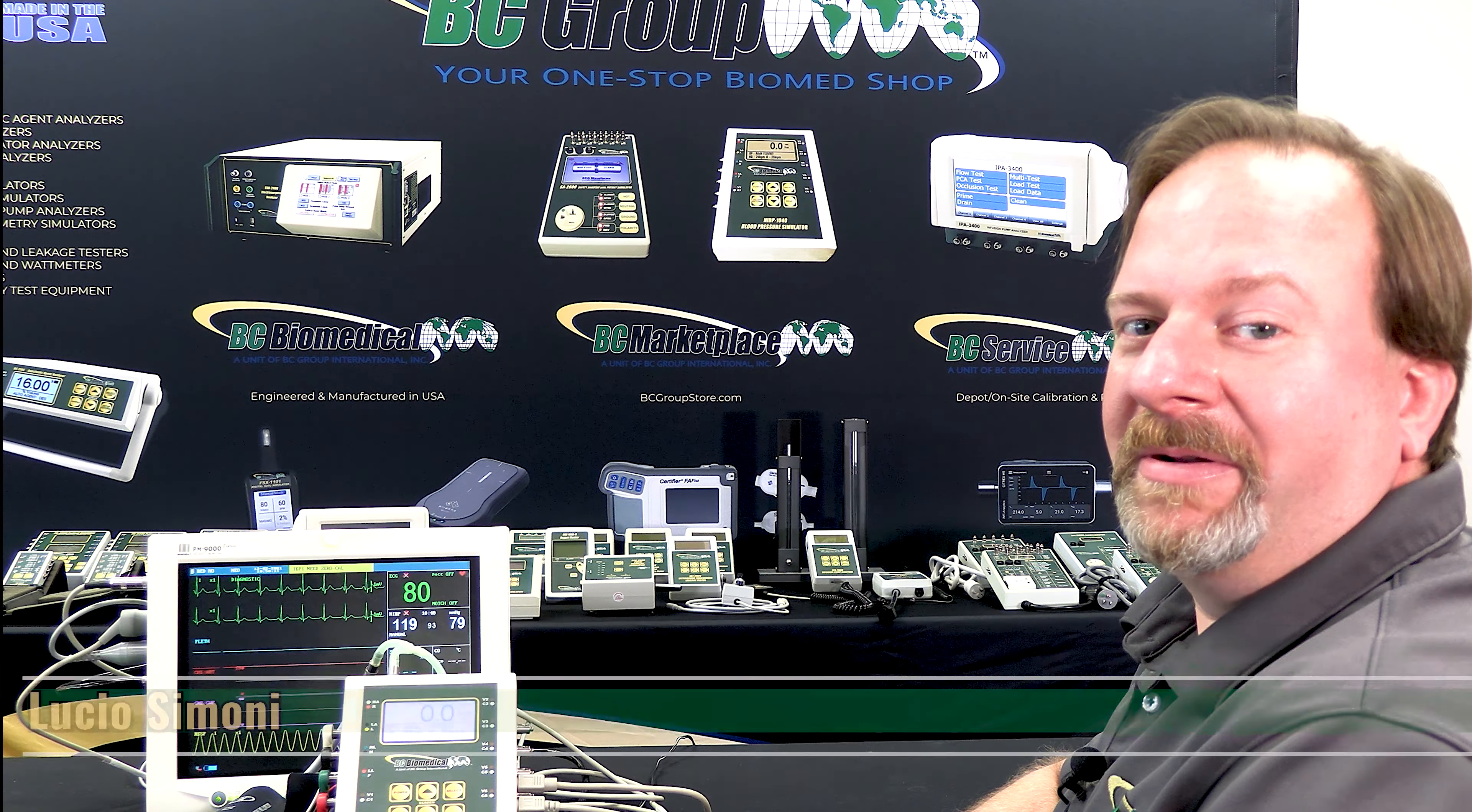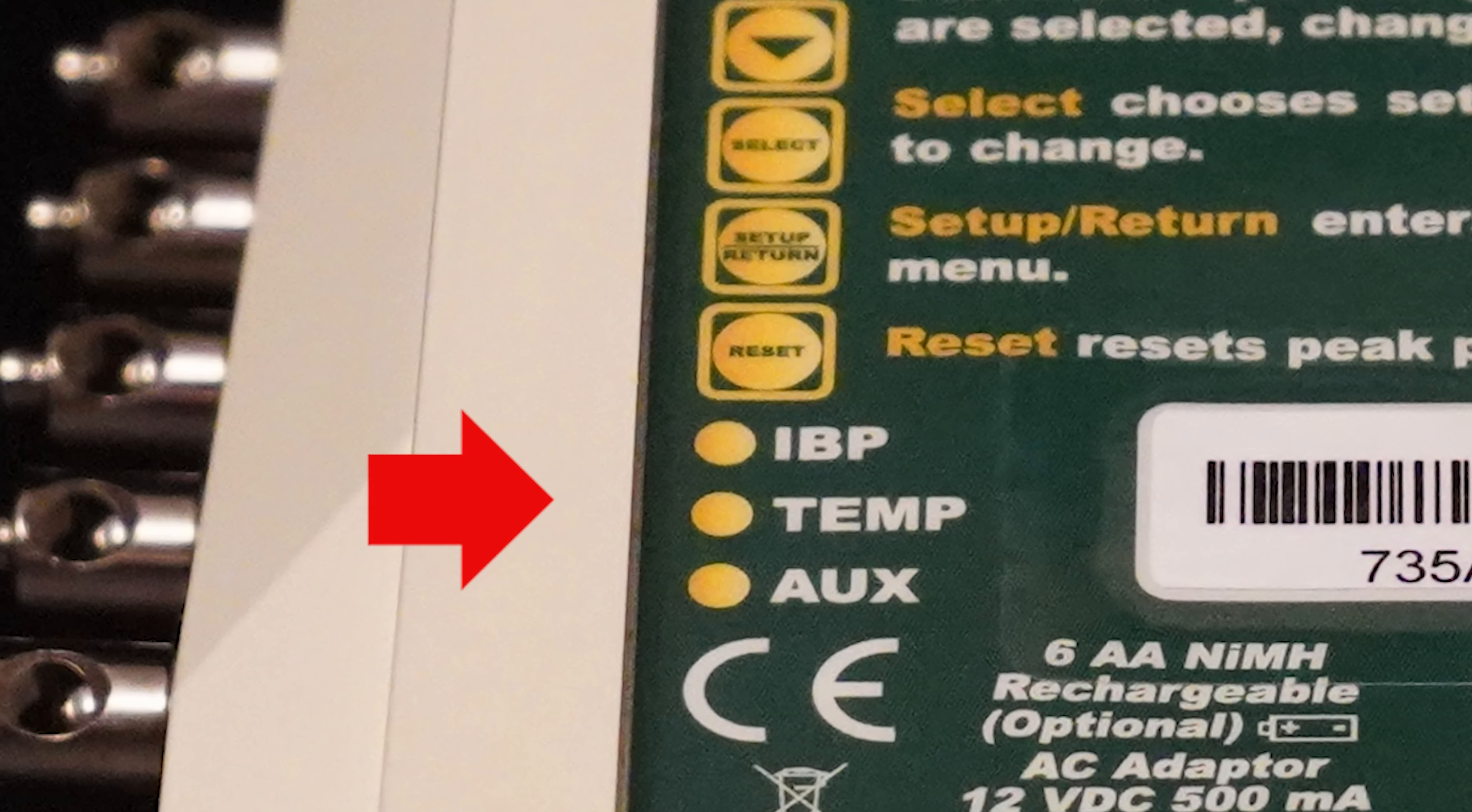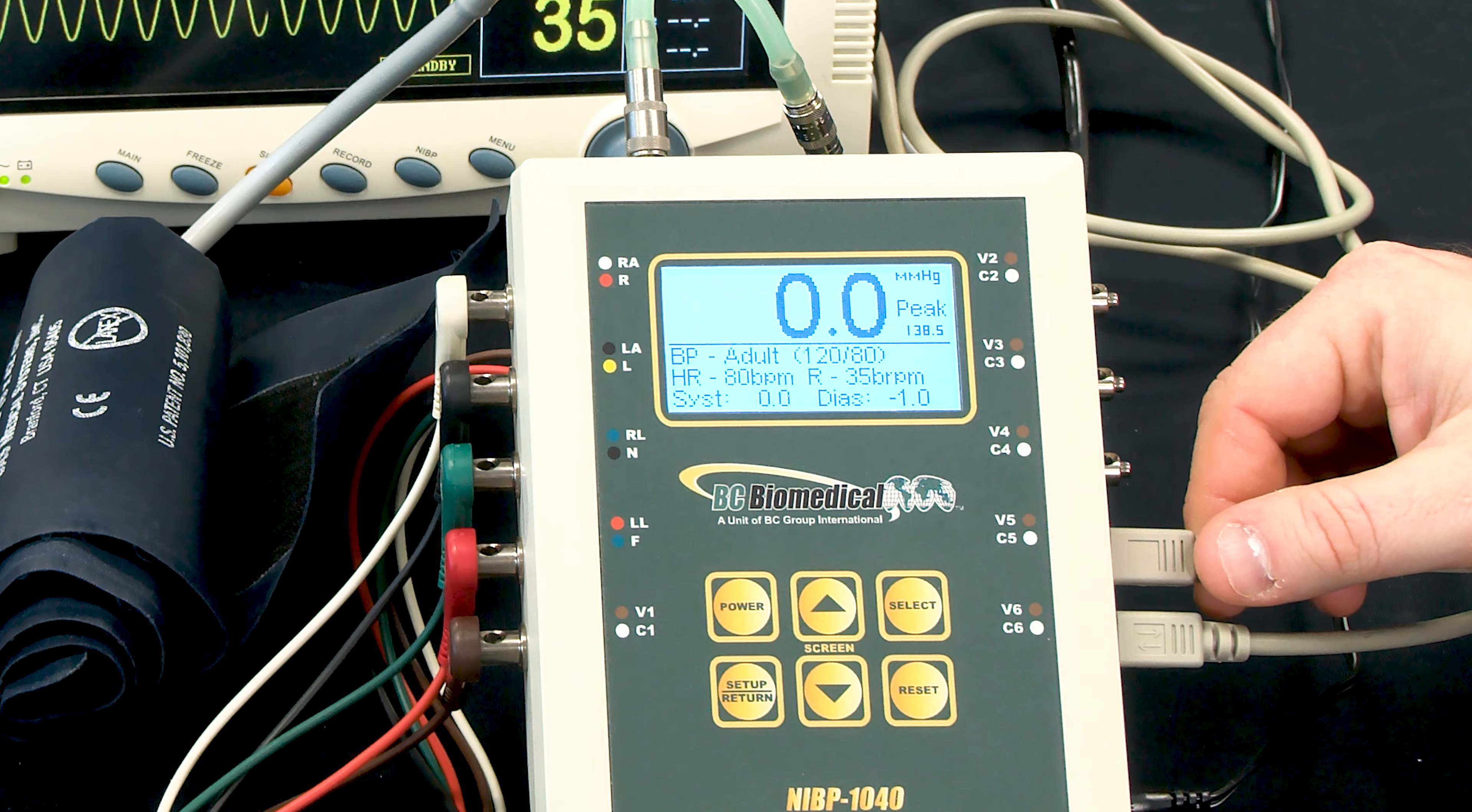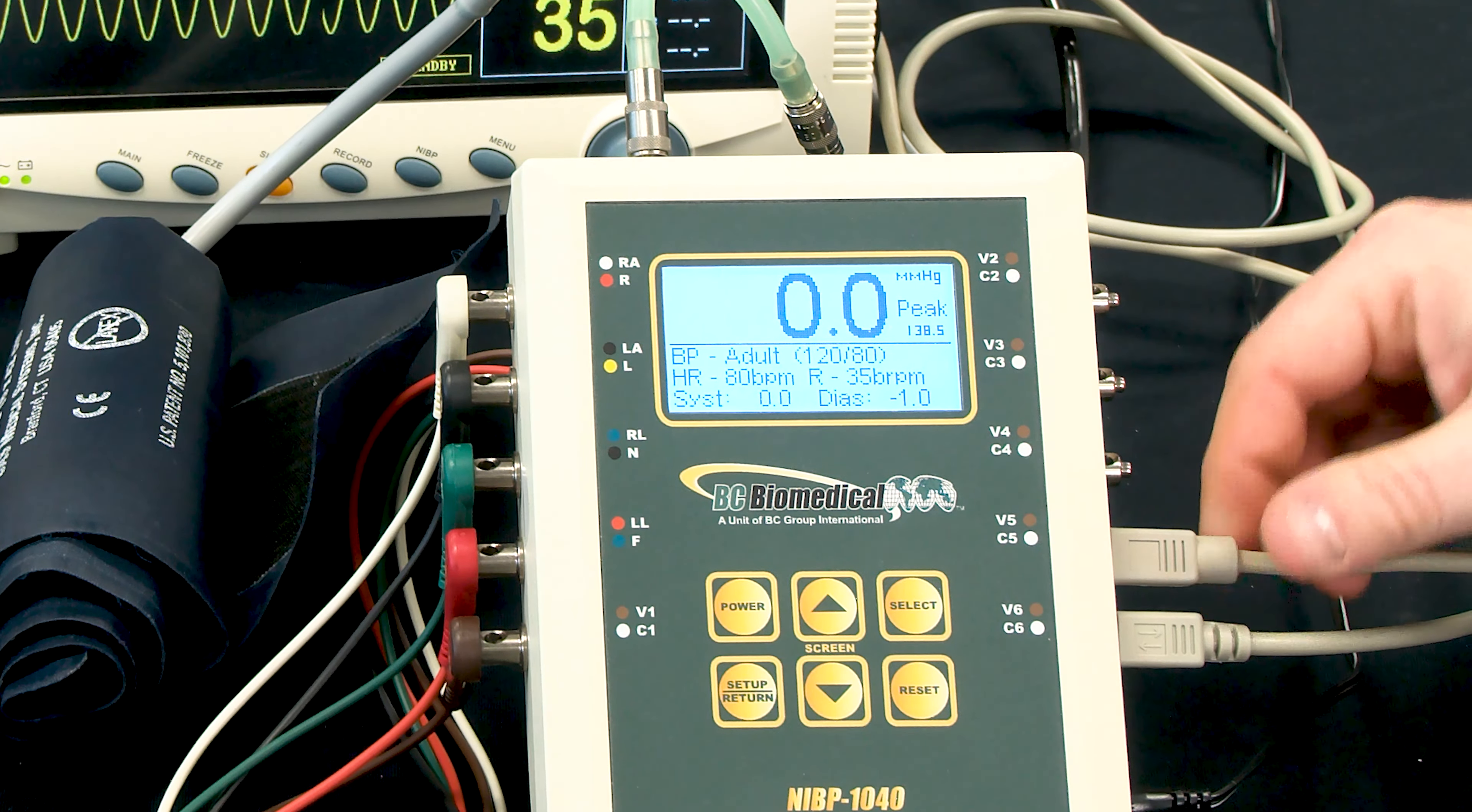In this case, I already have my IBP cable plugged in. On the back of the NABP simulator, we have a label that identifies the three ports. In this case, the top port is invasive blood pressure, and I have the cable plugged into my monitor. We can see that this line here in the middle is set for channel 1 invasive blood pressure, and it's not simulating anything. We need to figure out what's going on.